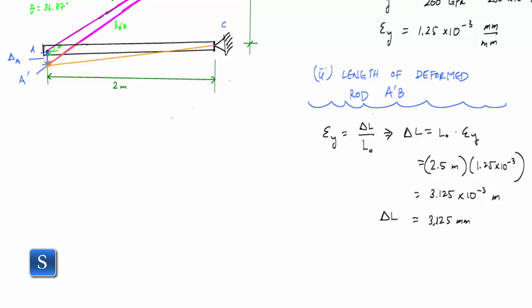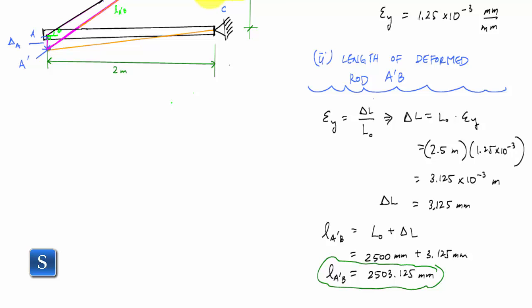And that would make the new length of my rod, this L A prime B, would be the original length of the rod plus the change in length. And that original length was 2,500 millimeters plus 3.125 millimeters, which makes the new or the final length of this rod 2,503.125 millimeters.